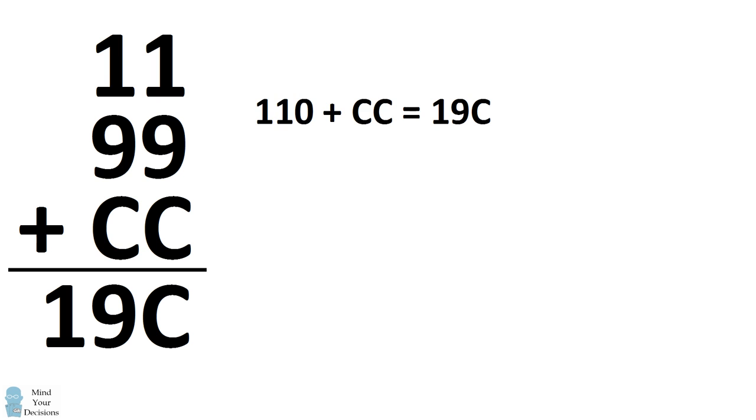We have 110 plus CC equals 19C. Again, looking at the Units place won't give us anything because 0 plus C is always equal to C. So we look at the tens place.